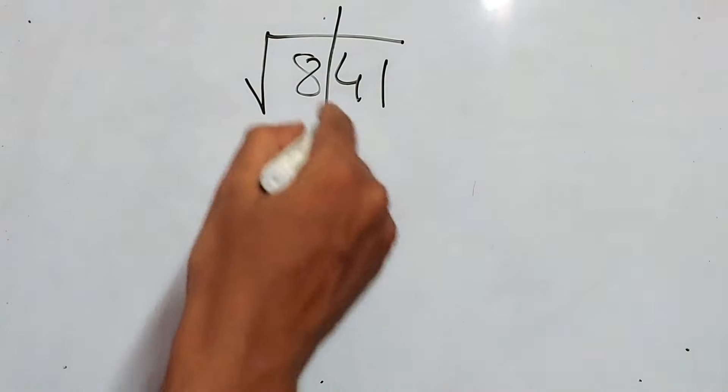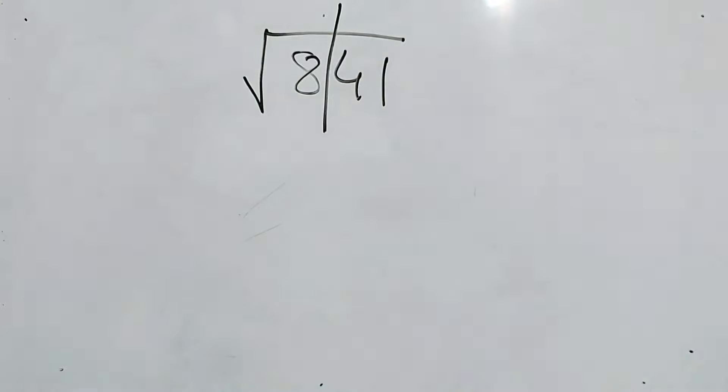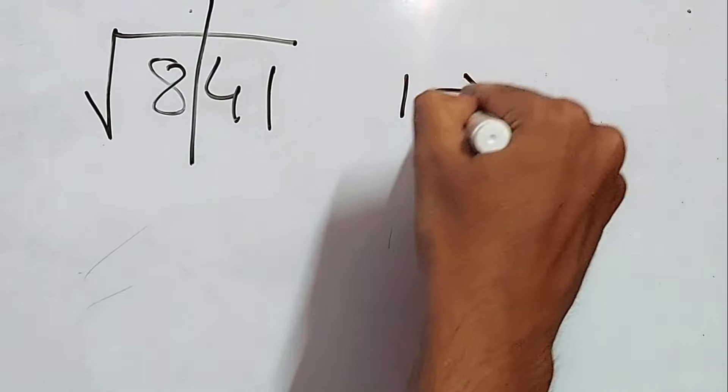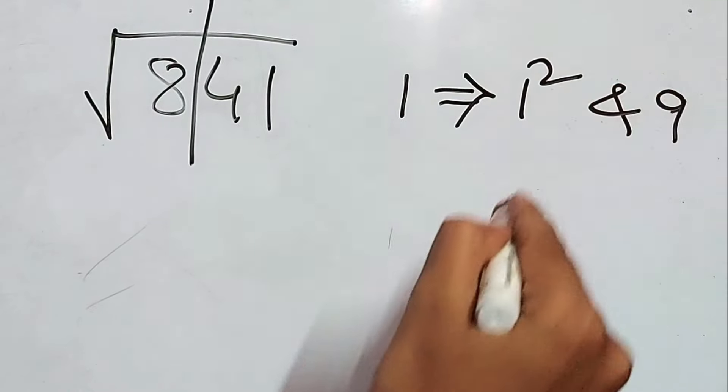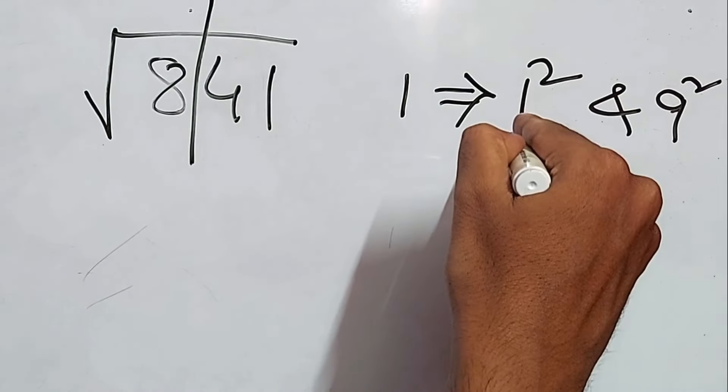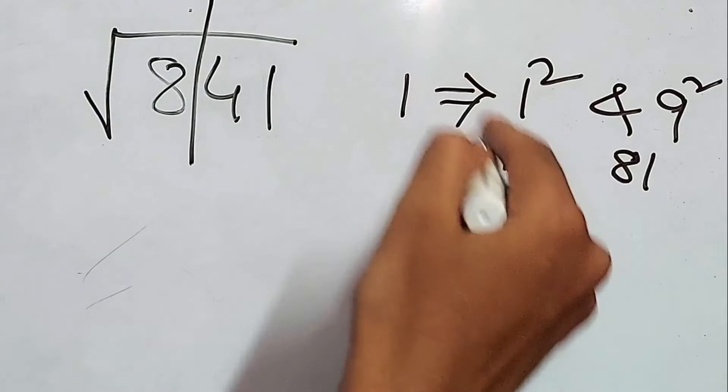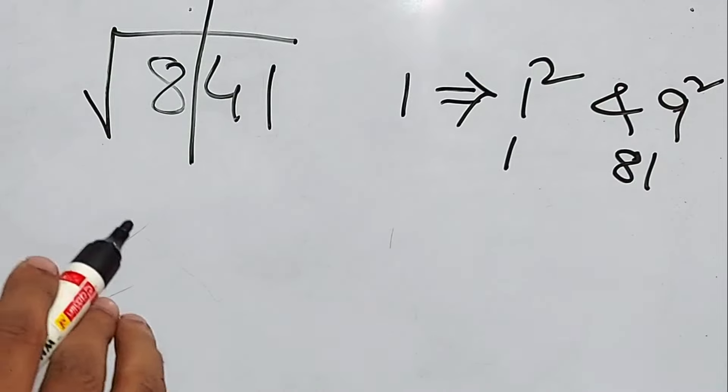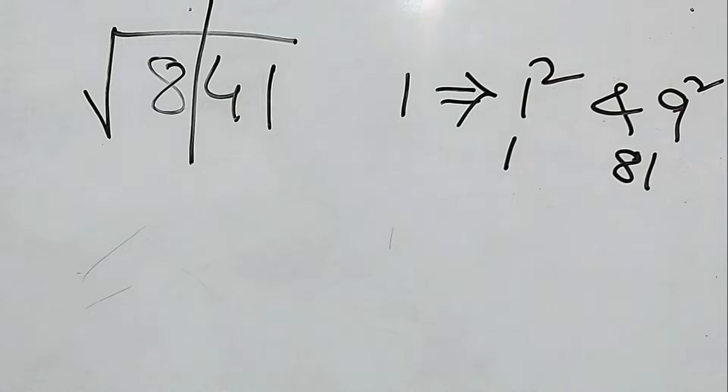Now, let us work with this 41. Not even 41. We just have to work with this 1 only. So 1 belongs to 1² and 9². 1² is 1 and 9² is 81. So both the cases, it ends with 1. We don't know which one to take, whether 1 or 9. We will definitely get to that.